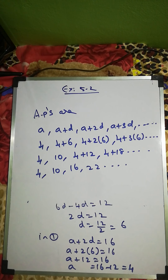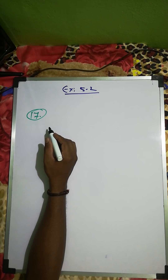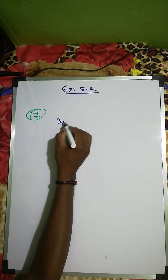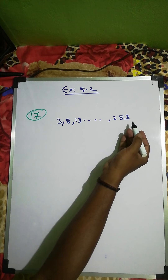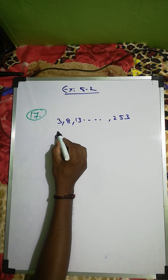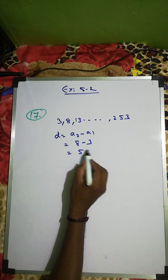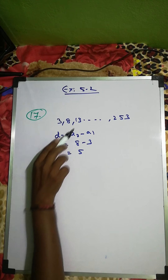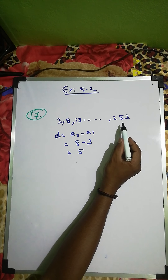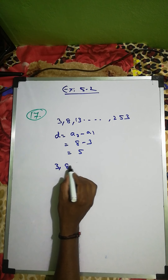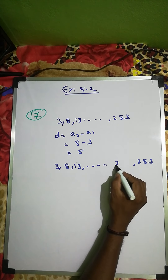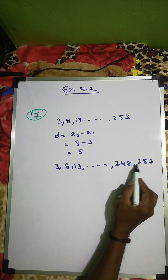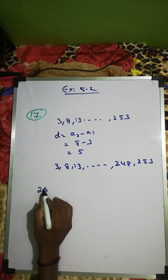Question number 17: find the 20th term from the last term of the AP 3, 8, 13, ..., 253. Here d = 8 - 3 = 5. Since we are going from the last term, we reverse the AP. The new first term a = 253 and d = 248 - 253 = -5.